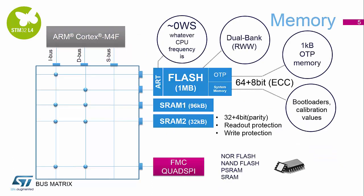Inside the core, looking at the main system blocks connected for memory, you can see that up to one megabyte of flash is connected through the ART accelerator onto the instruction and data bus. The SRAM is split into two different blocks. Both of these blocks can be accessed from the instruction and the data bus, and all of these blocks of SRAM have four bits of parity inside for RAM integrity checking.